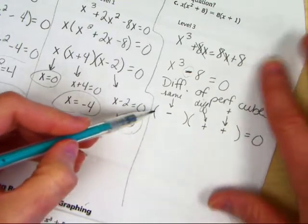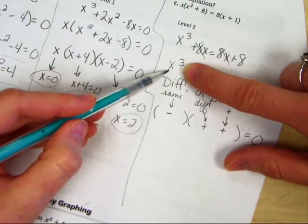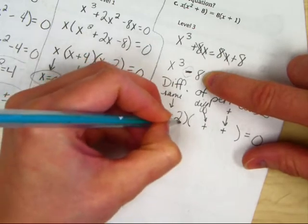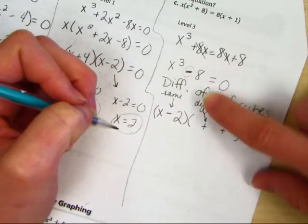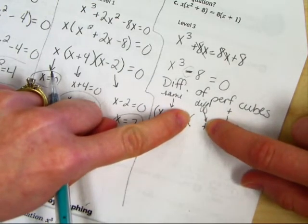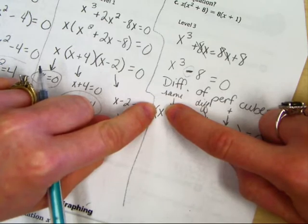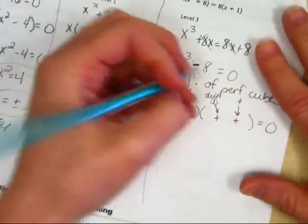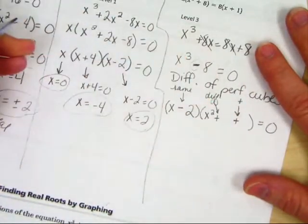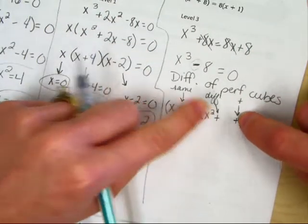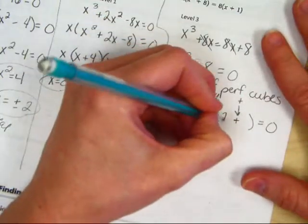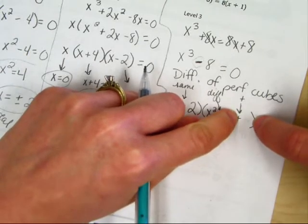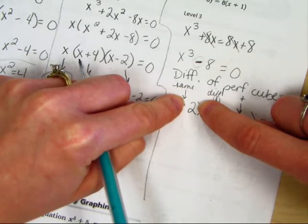The first item you put in is the cube root of the first guy. So the cube root of x³ is x. And then the second thing you do is you take the cube root of 8 and put it here. 2. Okay, now watch where I'm pointing, okay? This spot is this thing squared. One more time. This spot is this thing squared. So x². Watch again. This spot are these two multiplied together. 2x. And last, this spot is this one squared. So 4.